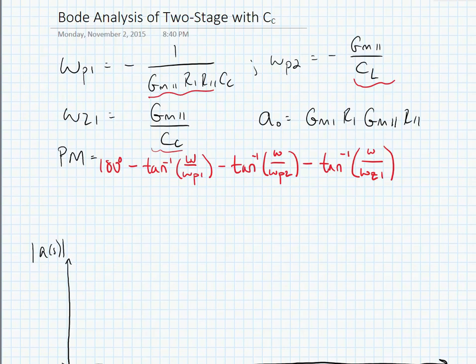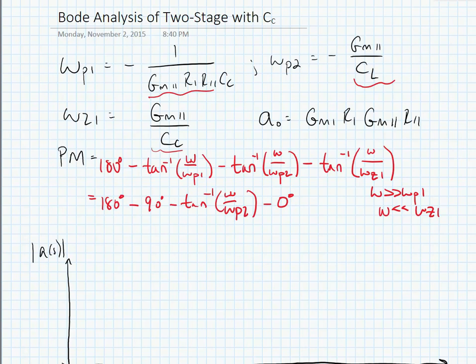We're going to look at the specific scenario where we're far away from the pole at omega p1—in other words, omega is much bigger than omega p1, but omega is still much less than omega z1. In this scenario, our phase margin becomes 180 degrees minus 90 degrees minus tan inverse of omega over omega p2, since at frequencies much greater than omega p1, the arc tangent goes to 90 degrees, and at frequencies much less than omega z1, the arc tangent is close to zero.